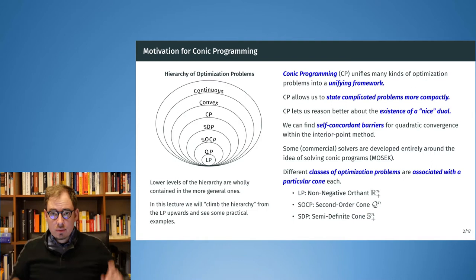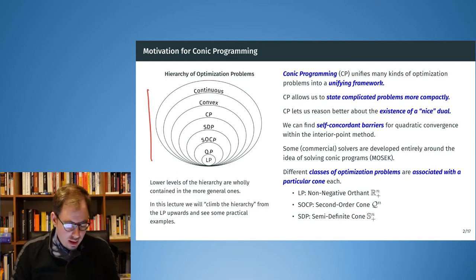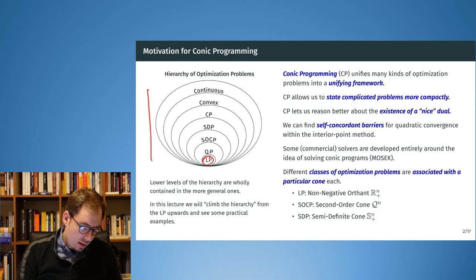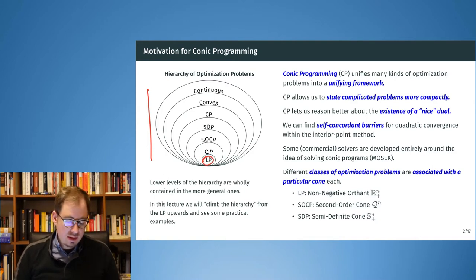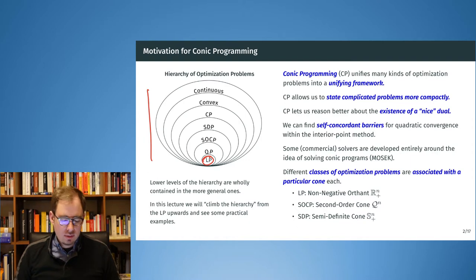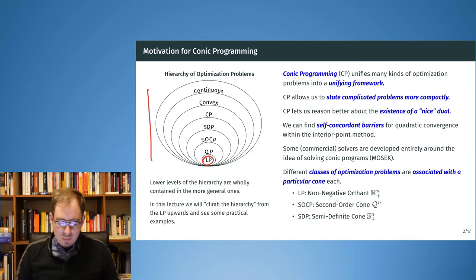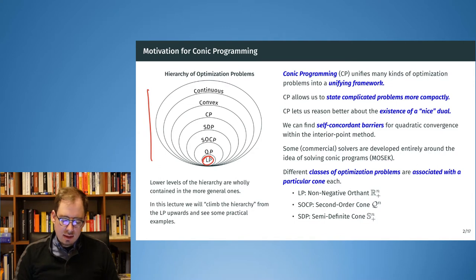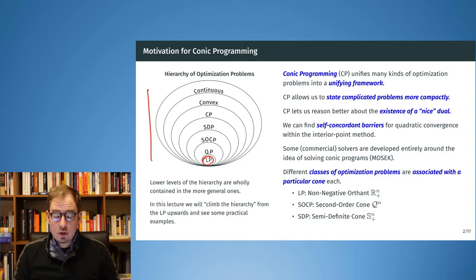In the very first course we saw this hierarchy of optimization problems. The hierarchy is such that the more easy problems are contained in the more difficult optimization problems, because we have more and more structure to exploit in our algorithms as we go lower into the hierarchy. What we will see today is that all these different levels can be described by different cones and optimization over certain cones — that is exactly what conic programming does — and it unifies a lot in this hierarchy.